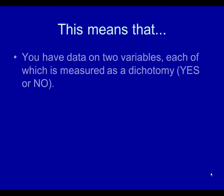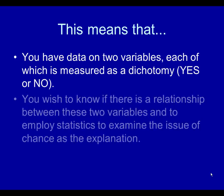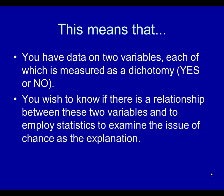This means that you have data on two variables, each measured in a dichotomous fashion — yes or no, or something of that nature. A dichotomous variable is one that has only two categories. You wish to know if there is a relationship between these two variables and employ statistics to examine the issue of chance as the explanation. In the example I'm going to use, it's going to be comparing a treatment group with a comparison group on the basis of whether they improved, with the options being yes or no.